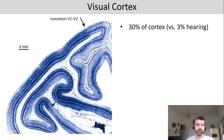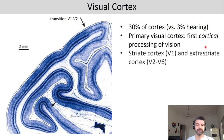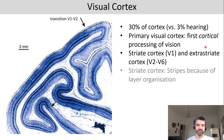The visual cortex makes up 30 percent of the cortex, which is quite a bit if you compare it for example to the auditory cortex which only makes up three percent. The primary visual cortex, or V1, is the first cortical processing of vision. Apart from the primary visual cortex, also called striate cortex, there are further areas V2 to V6, which are also referred to as extrastriate cortex.